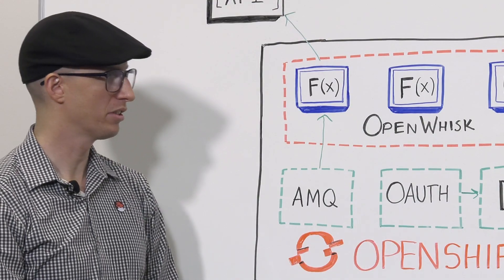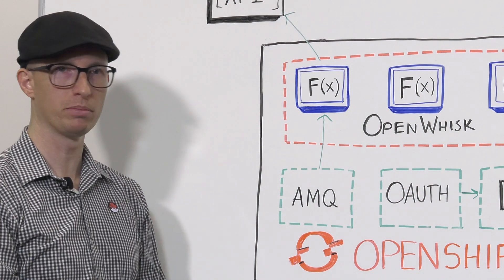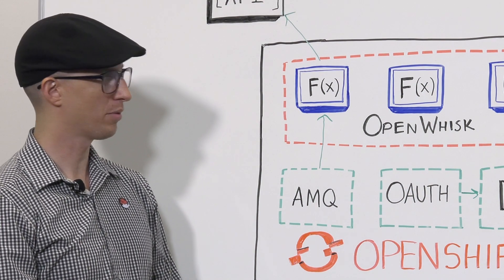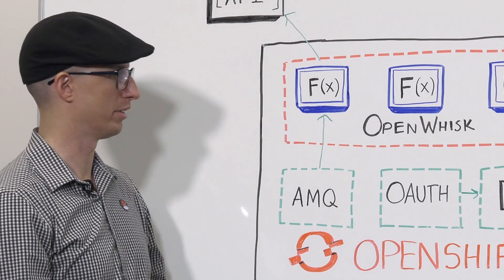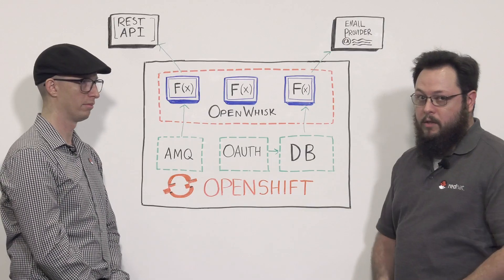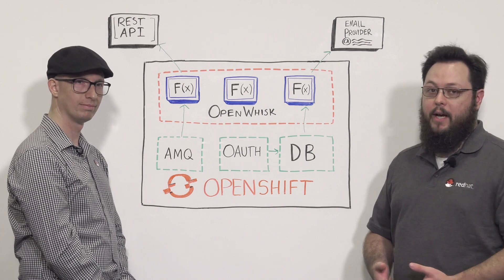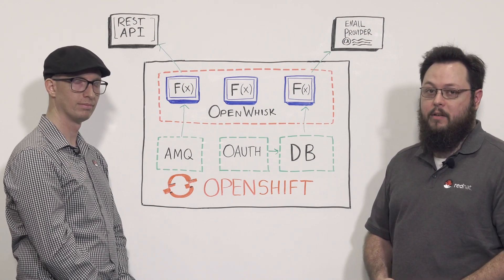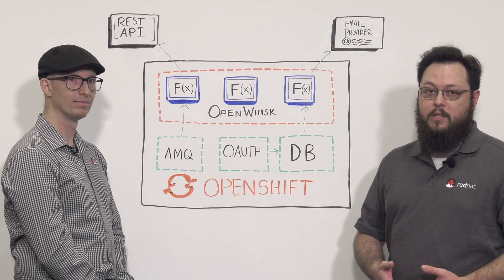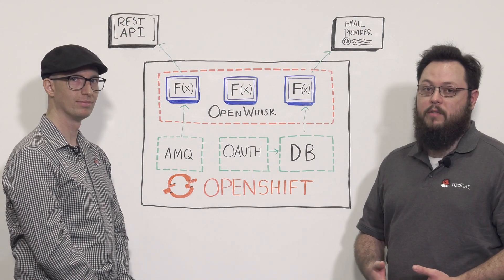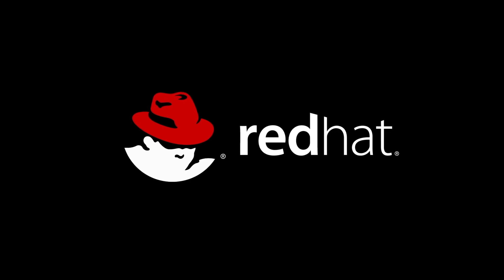That's a great example of a use case for OpenShift Cloud Functions, and there are many more people can think of — that's why serverless is such a hot topic right now and why we're offering OpenShift Cloud Functions. To learn more about serverless architecture and functions as a service, reach out to your Red Hat account executive or go to redhat.com/services to find out how consulting and training services can work with you. Thank you.